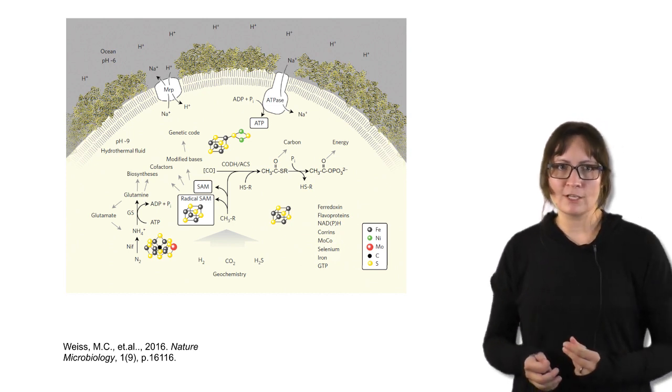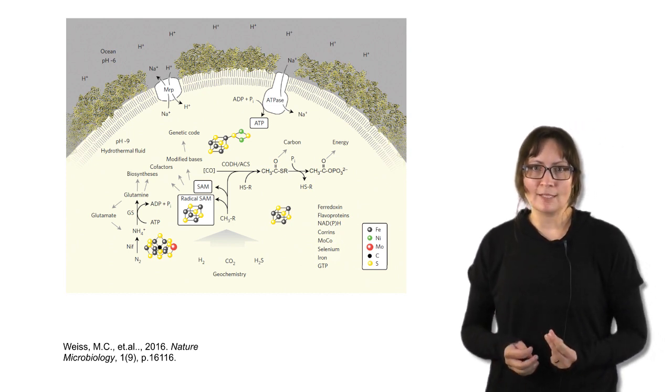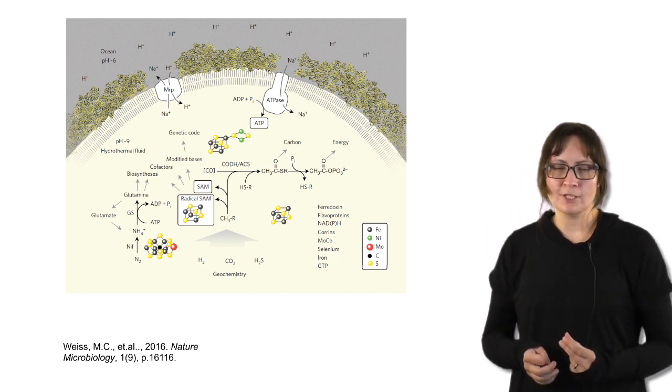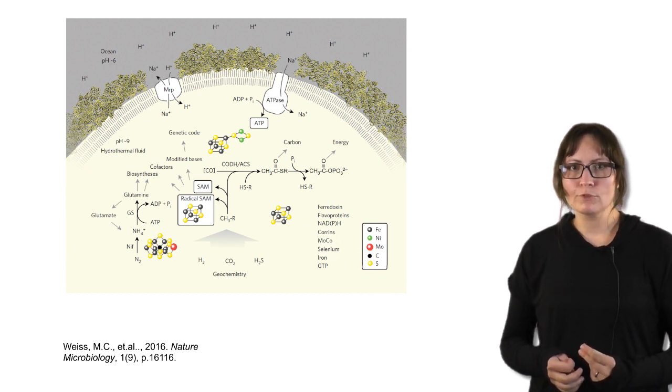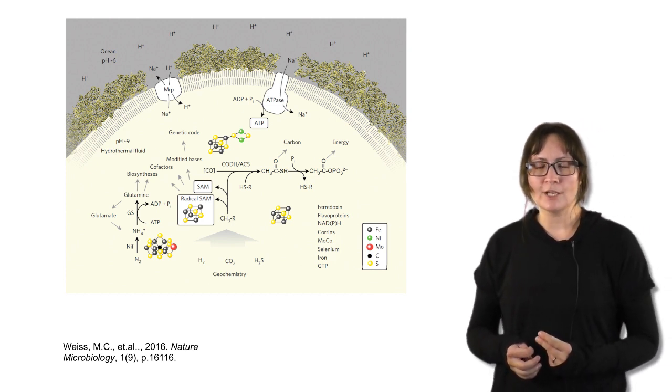Another important part of LUCA's earliest metabolism are enzyme cofactors, most notably still widely used in modern life as S-adenosylmethionine and iron sulfur clusters. Both of those were likely abundant in earliest metabolism.